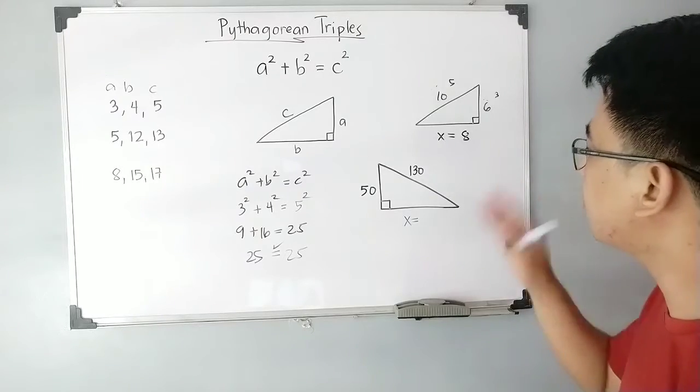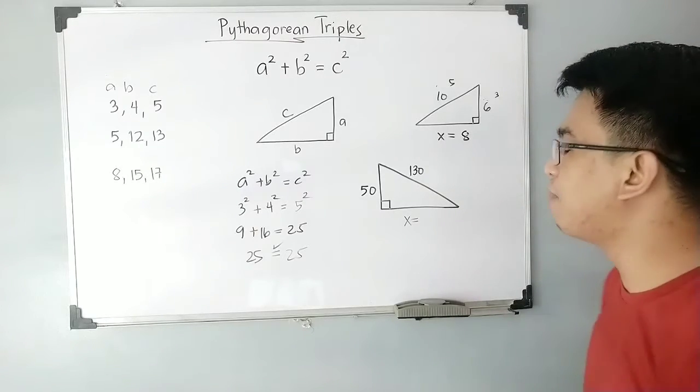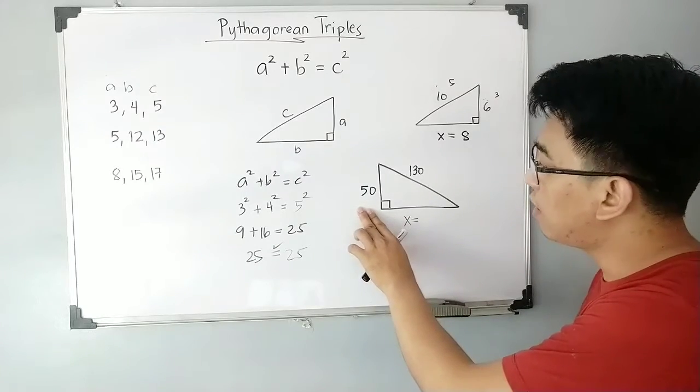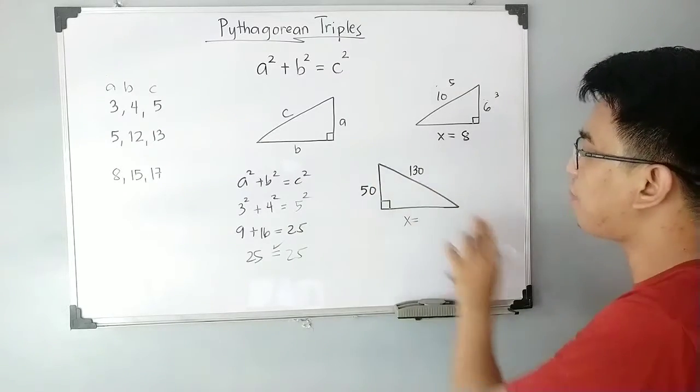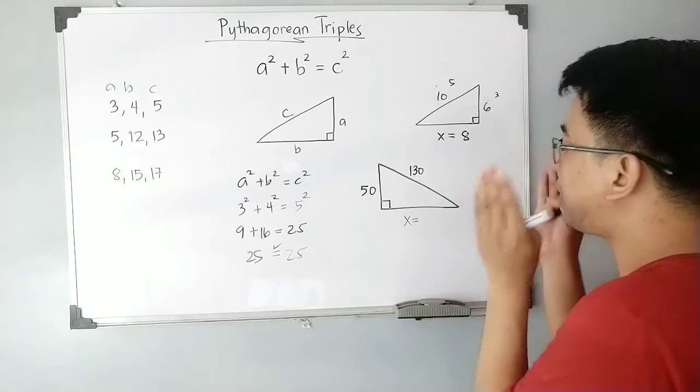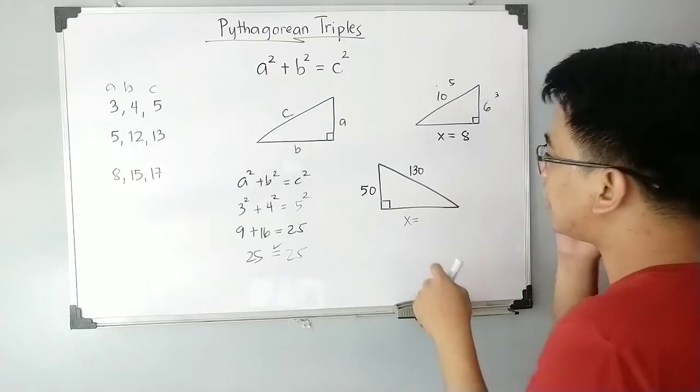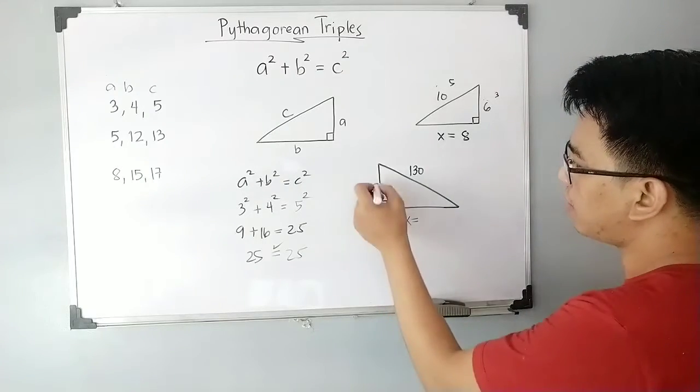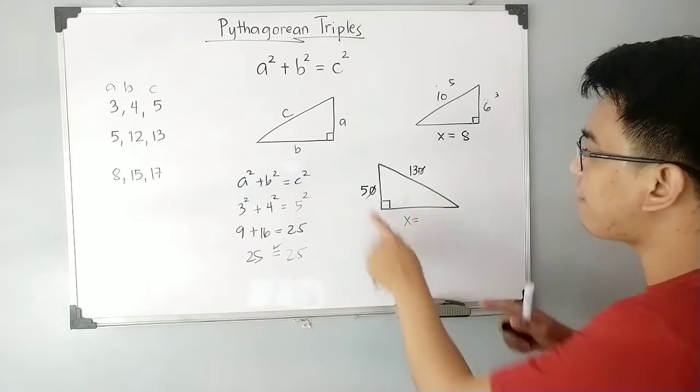As our last example, we have one leg measuring 50 units and the hypotenuse measuring 130 units. If you know the Pythagorean triples, as you can see, these two numbers end with zero, so we can eliminate the zero and we have 5 and 13.